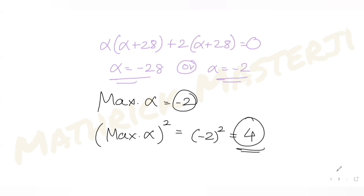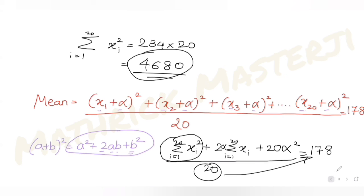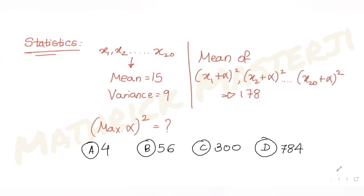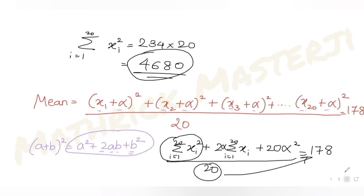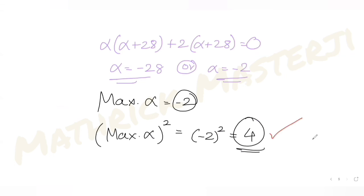The square of the maximum value of alpha is (−2)² = 4, which matches option A. So option A is the correct answer.